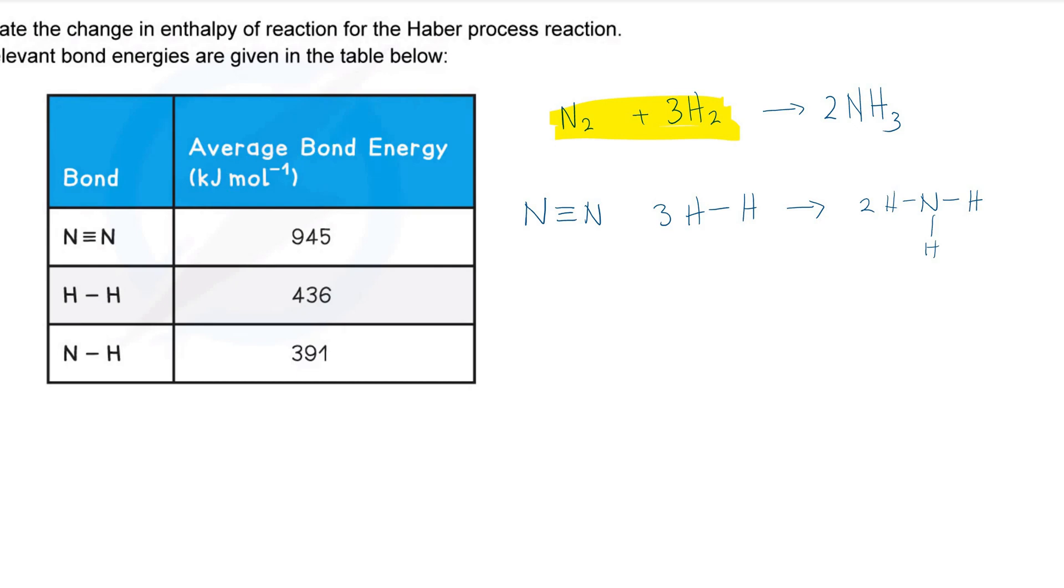And we have one triple bond N≡N and three hydrogen-hydrogen bonds. So we require a total energy of 945 plus 3 times 436. That makes 2253 kilojoules. And we keep the sign positive as bond breaking is endothermic. It absorbs energy.